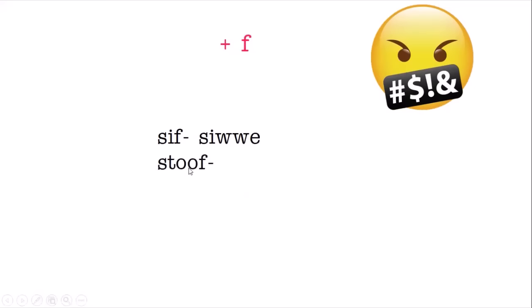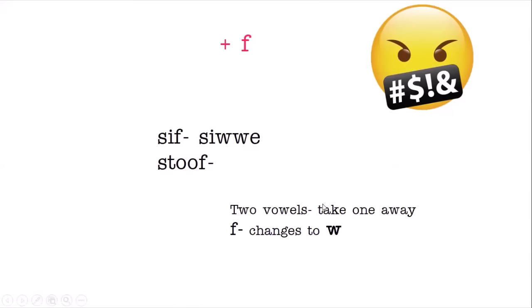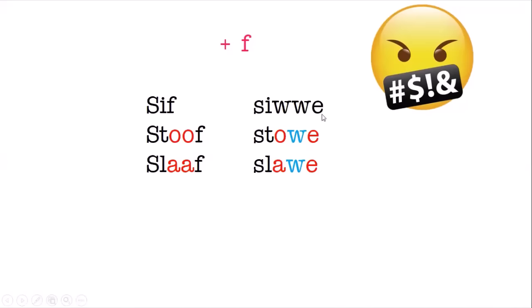For 'stoof', we have twins - double vowel - so we take one away and send it to grandma. And also the F changes to W. Stoof word stowe - F becomes W. For 'slaaf' with twins, we send one to grandma and also change F to W. Slaaf word slawe.